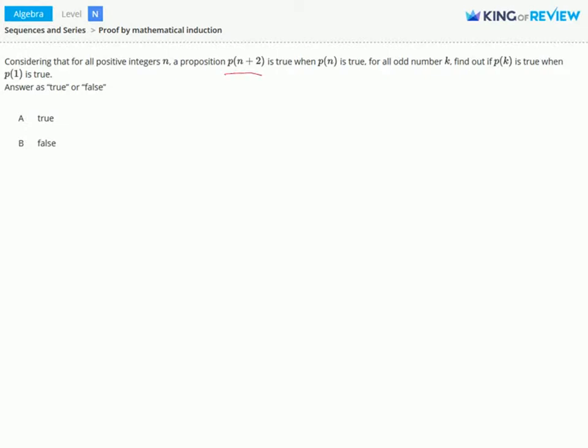So we have this information here, p of n plus 2. When we have p of 1, this means that our n value is equal to 1.